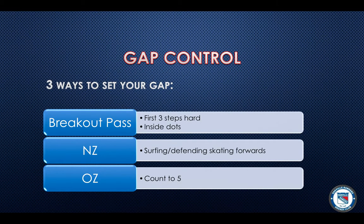So three ways you set your gap. First way is through any type of breakout pass — it's your first three steps hard inside the dots to set your gap. Another way to set your gap is through a neutral zone with any type of surfing or defending skating forwards. And the one we're going to talk about in particular in this video is going to be in the offensive zone.